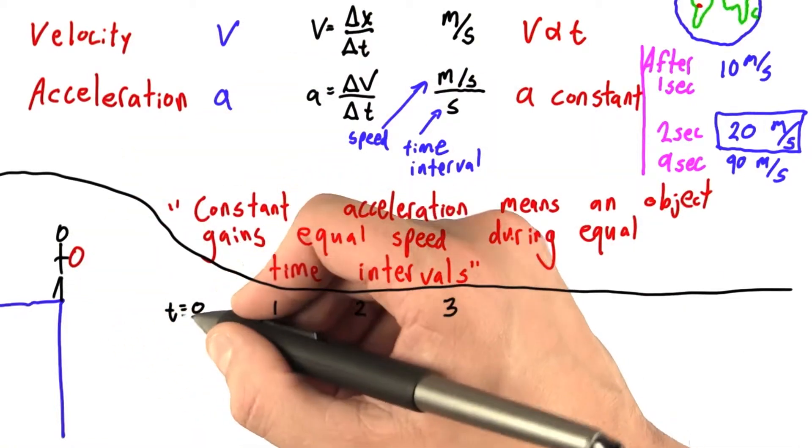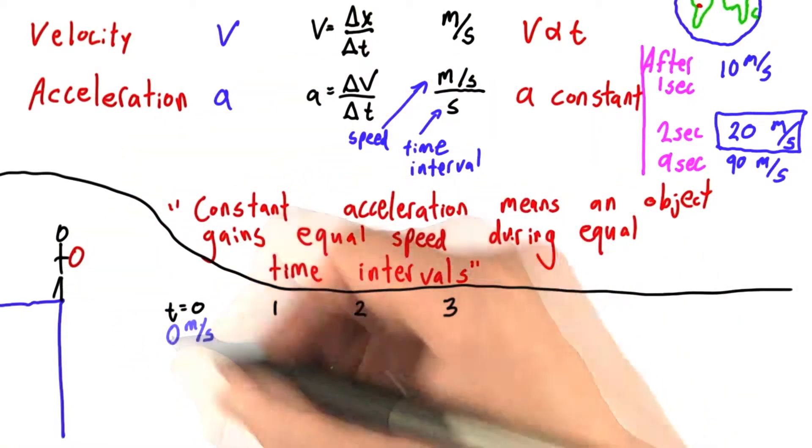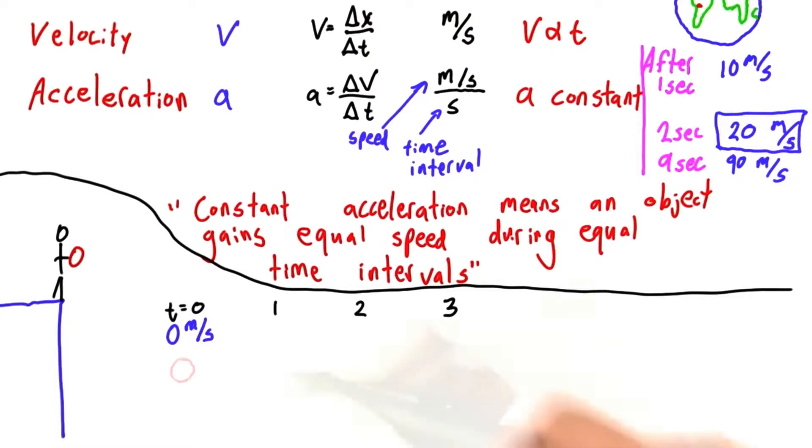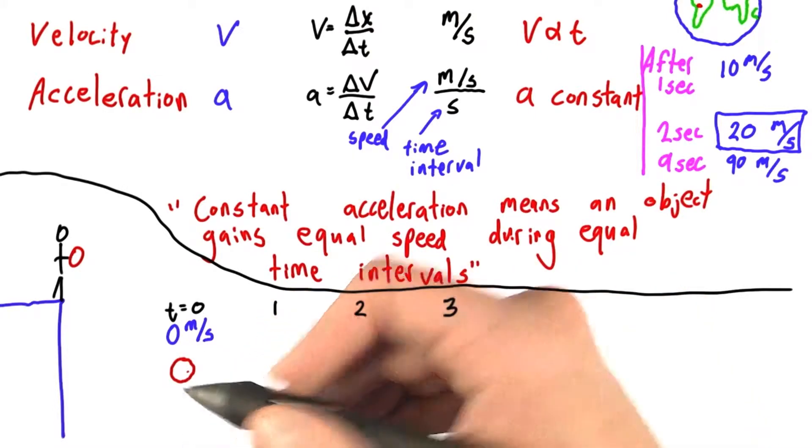So let's imagine that we drop a ball. Well, the instant we drop the ball, t equals 0, the ball's speed is 0 meters per second. If I wanted to represent this with a picture, I would just draw a stationary ball.